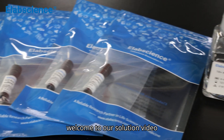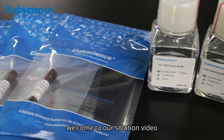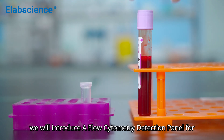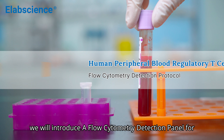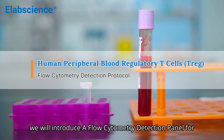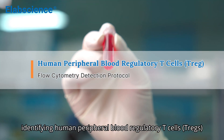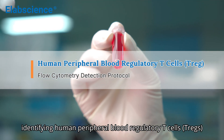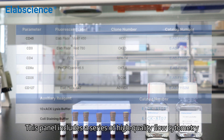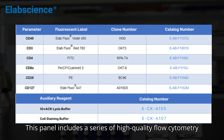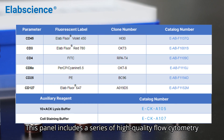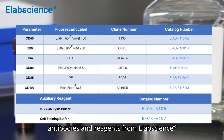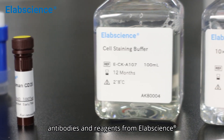Hello, everyone. Welcome to our solution video. Today, we will introduce our flow cytometry detection panel for identifying human peripheral blood regulatory T-cells. This panel includes a series of high-quality flow cytometry antibodies and reagents from a lab science.